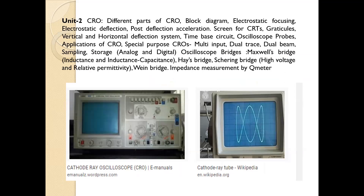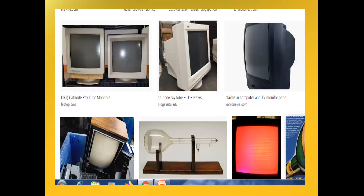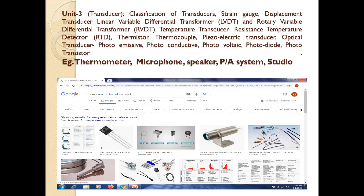In Unit 2, CRO and bridges will be discussed. In Unit 3, transducers will be discussed. Here you can see this is the diagram of resistance temperature detector, RTD. This is the diagram of thermocouple. This is thermistor, and this is semiconductor thermistor.